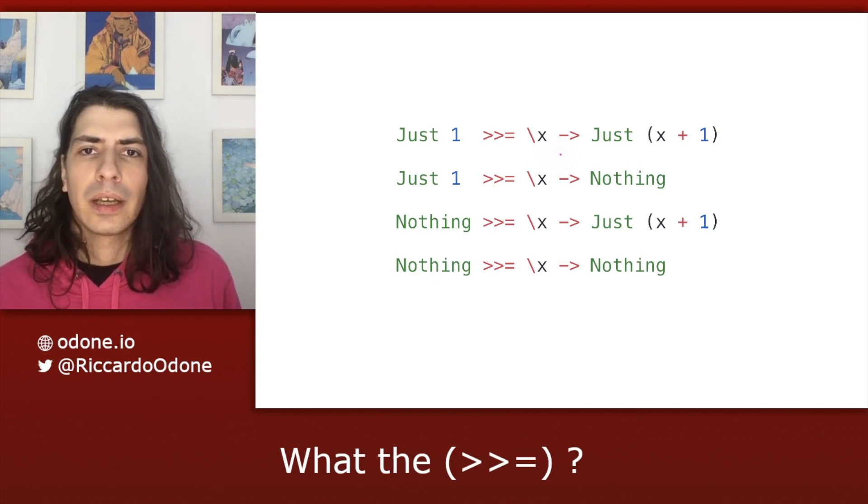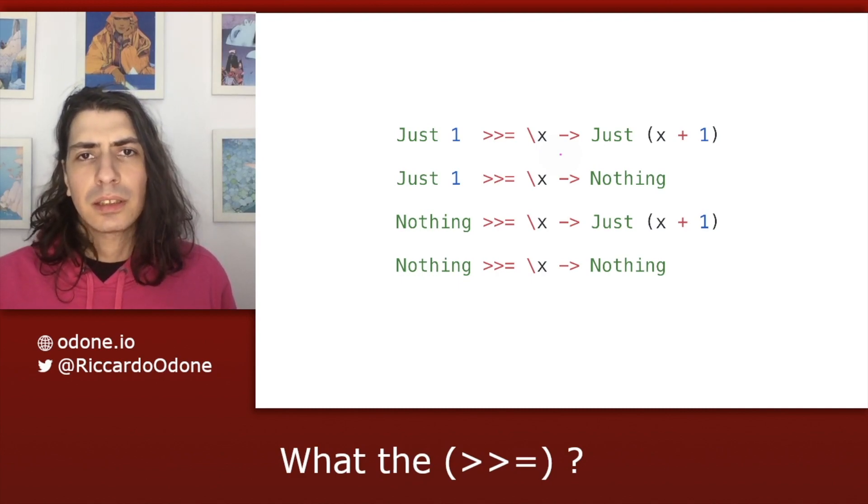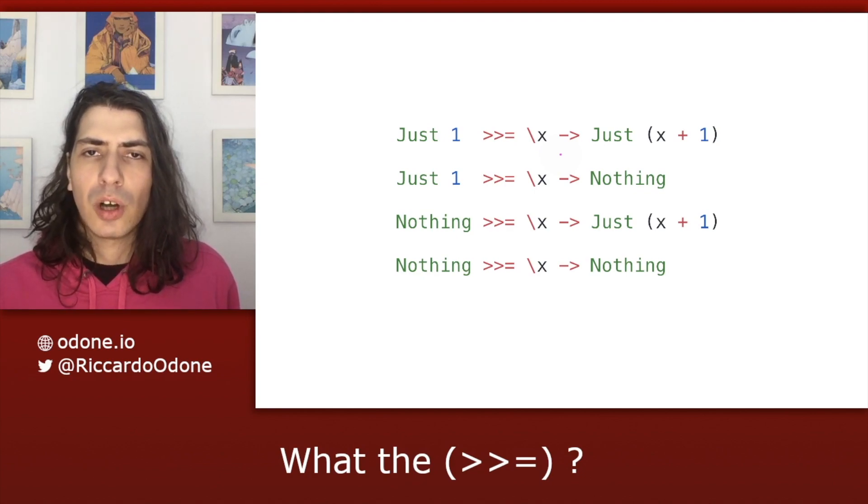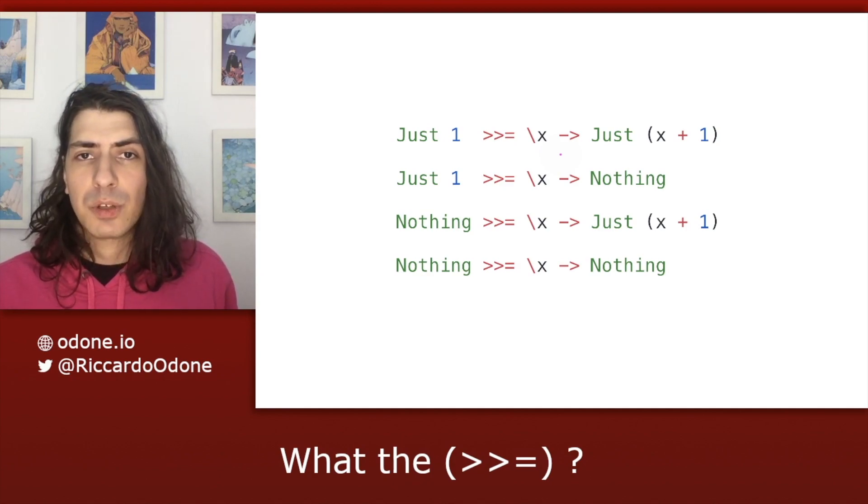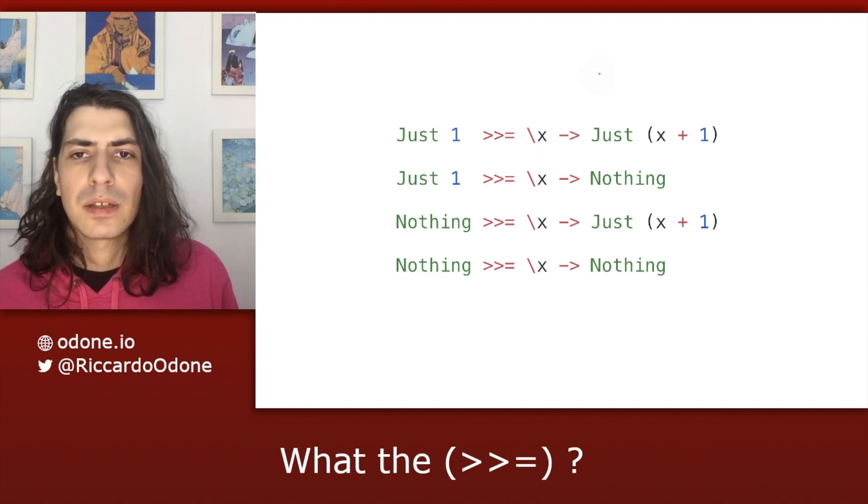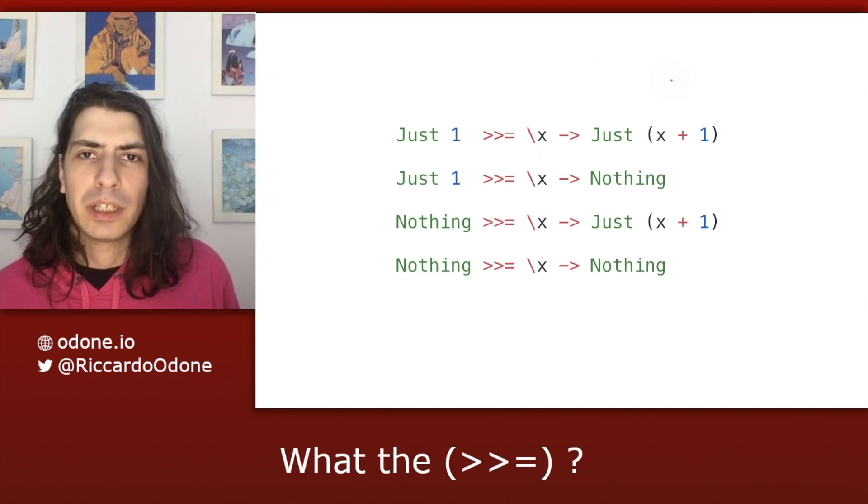Now, again, remember that bind behaves a bit like fmap in terms of the one discriminator on the initial value. But the unique thing of monad, as we saw before, is that not only the step function decides how to manipulate the b—so for example, here we go from 1 to 2—but also monad, again in this example for Maybe, decides what value constructor to use.